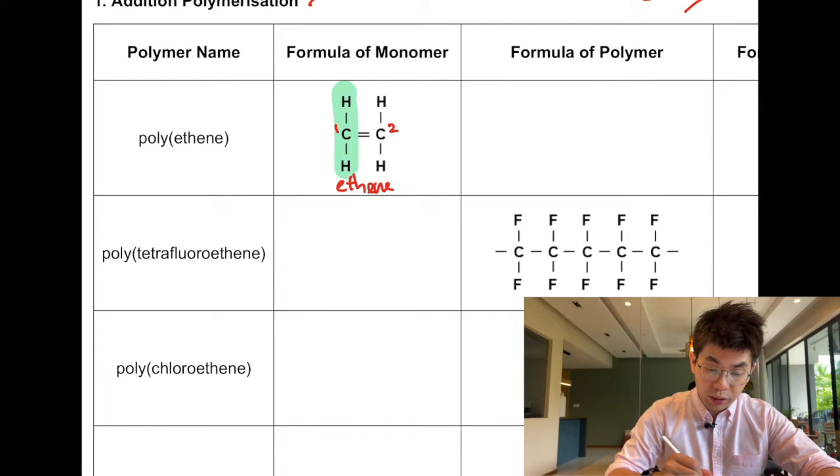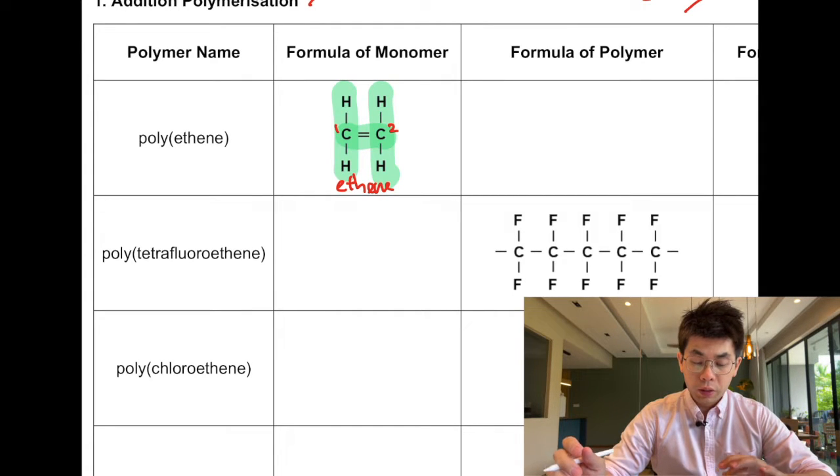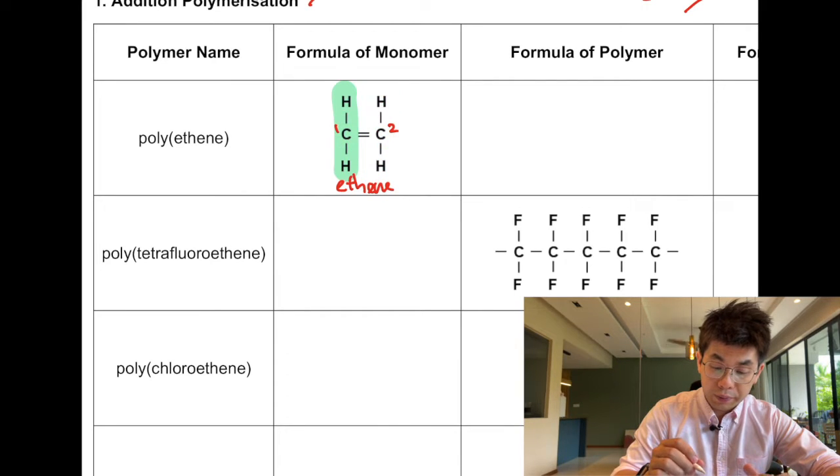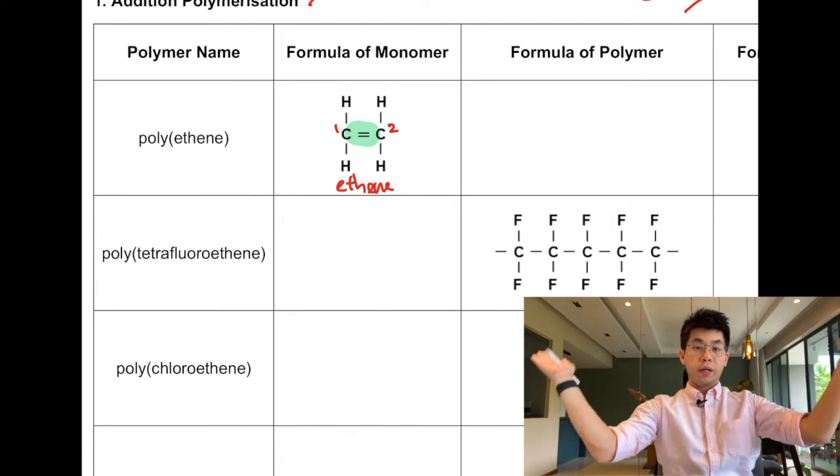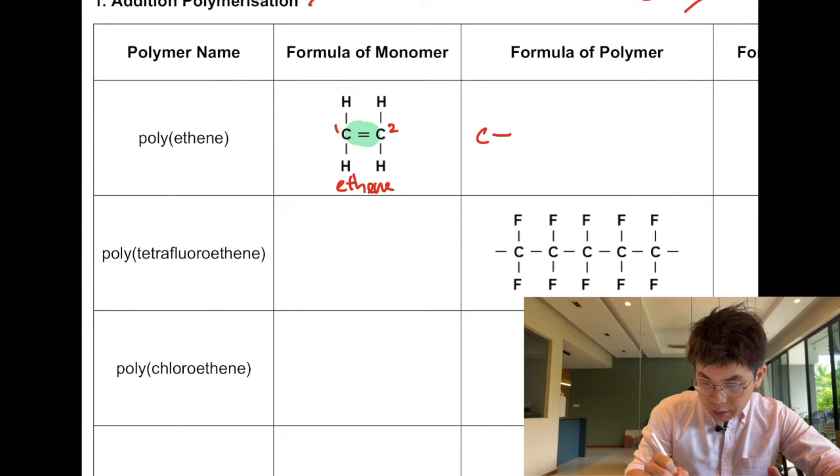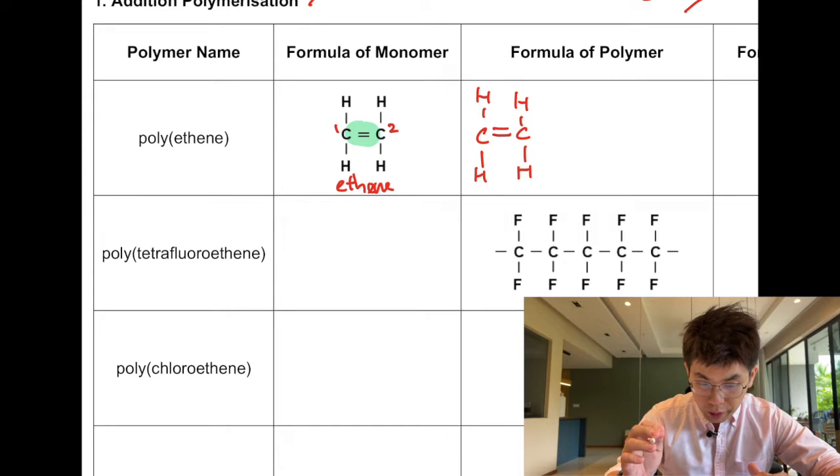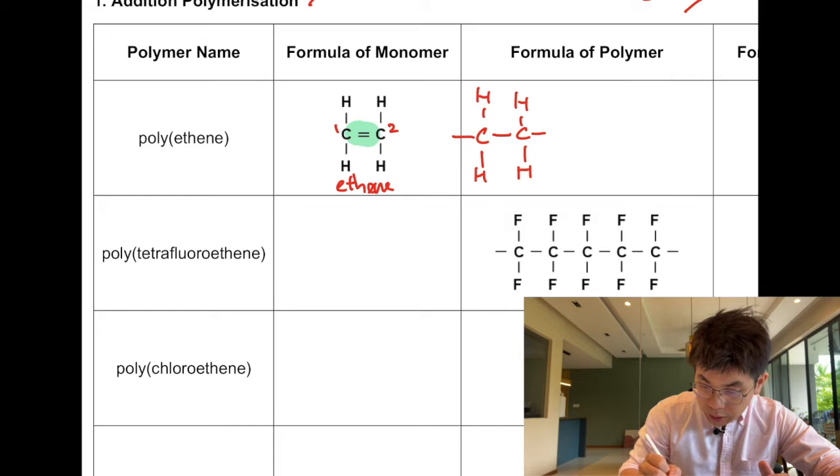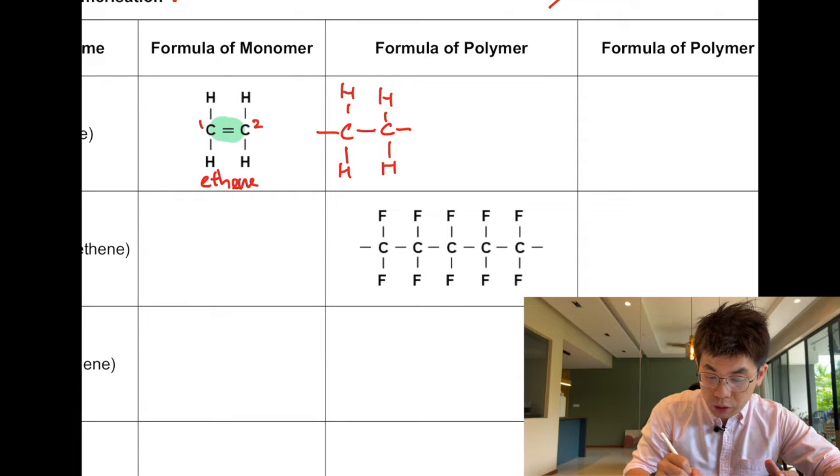Sometimes you draw it in different ways, but I will always suggest that when we talk about addition polymerization we draw in this manner. What happens in the polymerization is that the double bond will break, and then you open up the hands this way. What you get is one unit that will join with another unit on the side which has undergone the same thing.